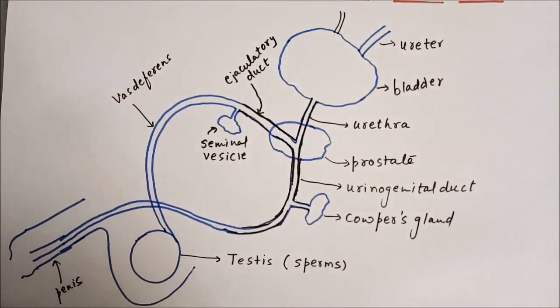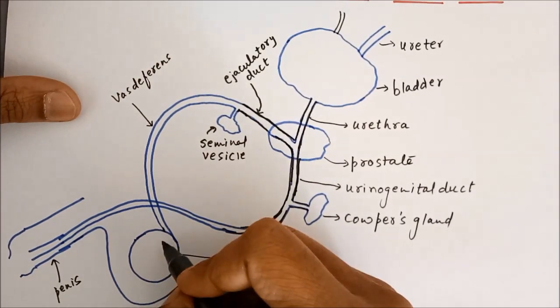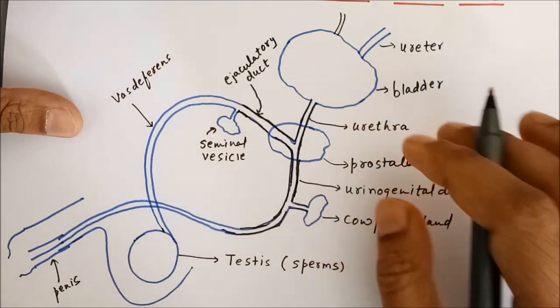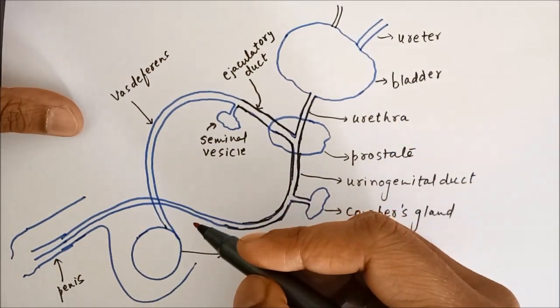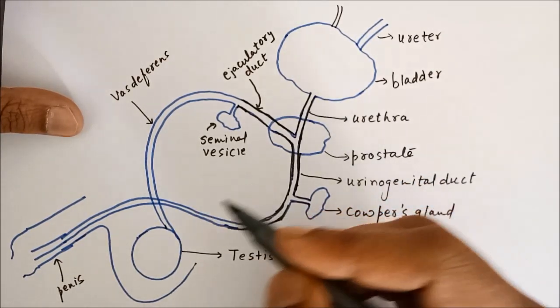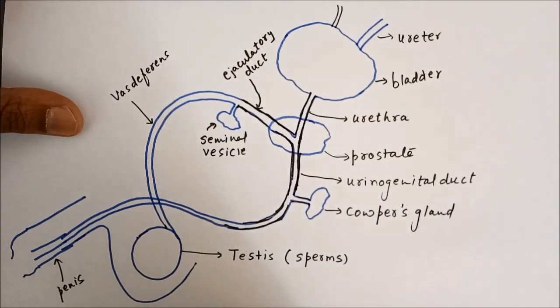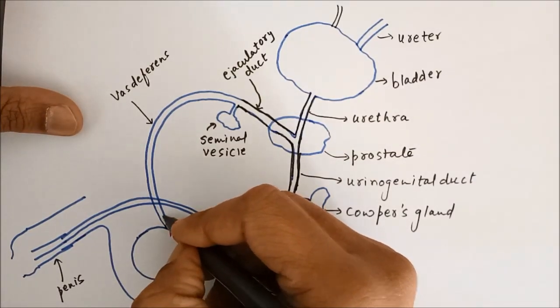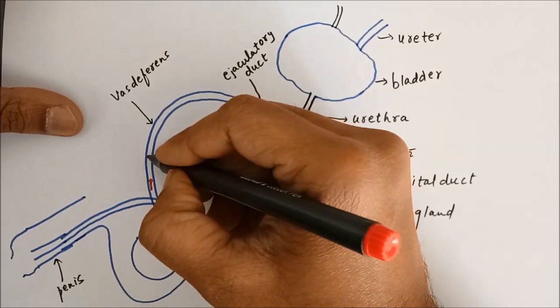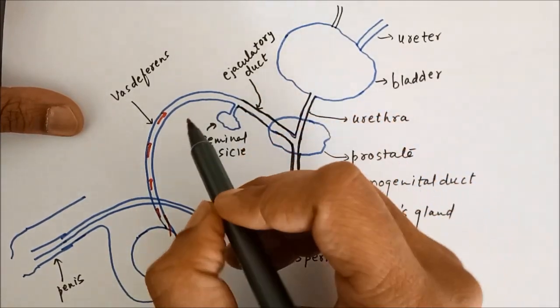Now let us understand the functions of all these. So what happens is the sperms are produced in the testes, and sperm production in males starts during puberty. So after the age of about fourteen years, the testes start producing sperms. These sperms travel along vas deferens. The vas deferens only collects the sperms and passes them ahead.